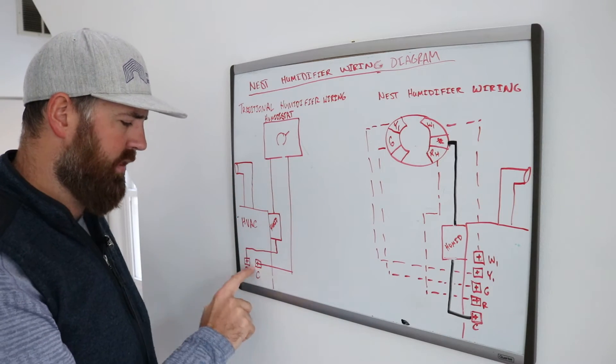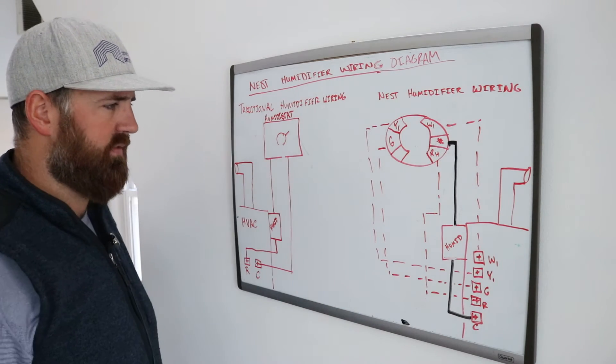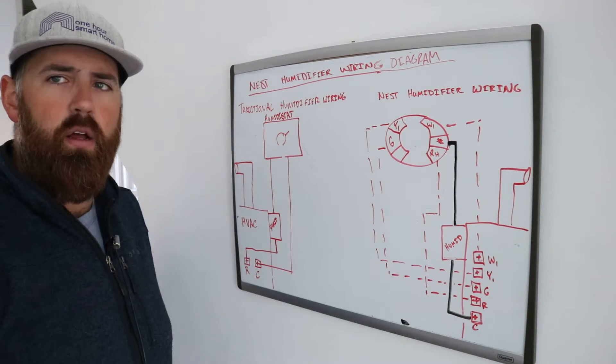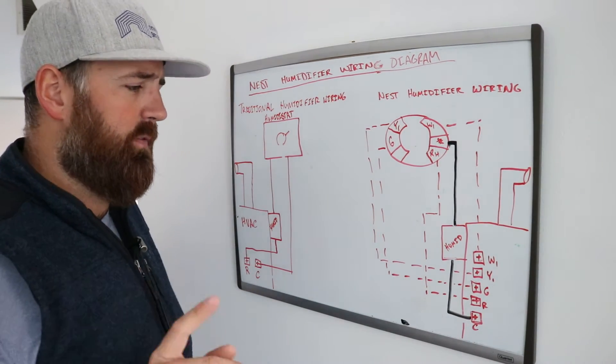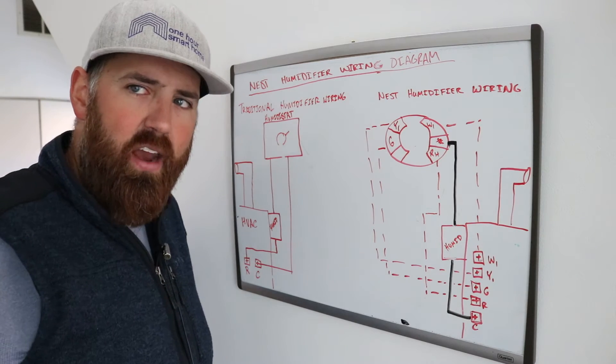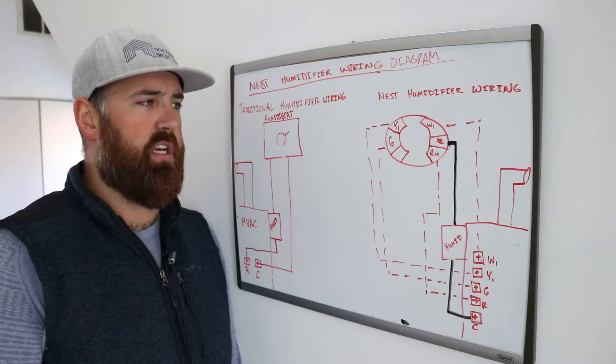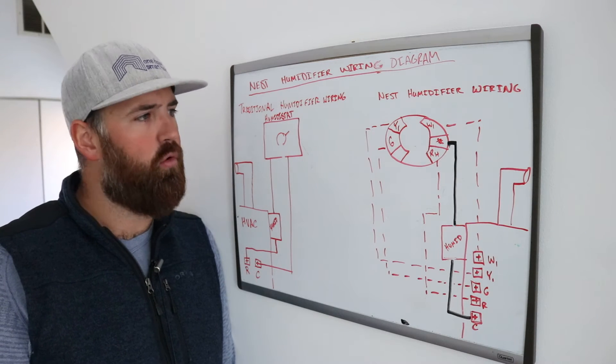So if it can't get to this return path, the humidifier won't activate and this is the switch that controls that return path, the humidistat. Now, the Nest works a little bit different because the Nest thermostat always has power going to it because it has to charge itself and because it's got to turn on other things like your fan, like your heating and cooling.